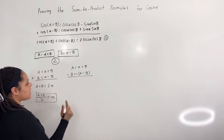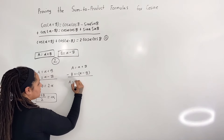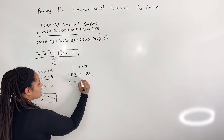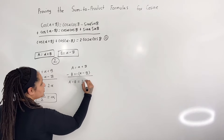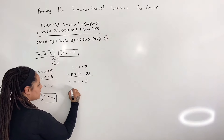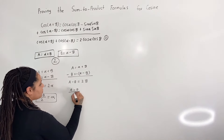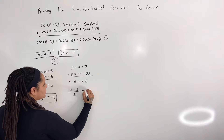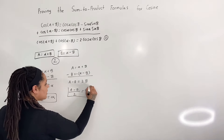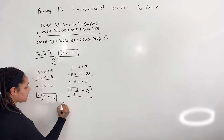And subtracting, we have a minus b is equal to 2 beta, and if I solve for beta, we have a minus b over 2 is equal to beta. I'm going to call these two equations equations 3.